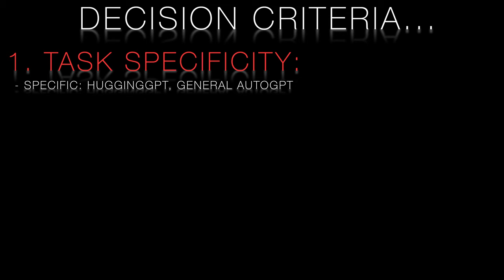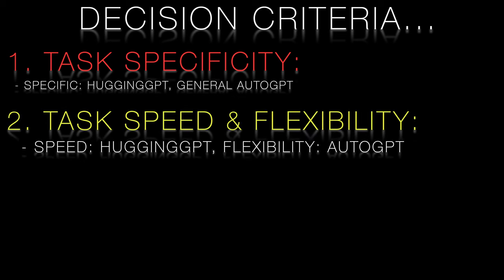When choosing between Auto-GPT and Hugging-GPT, you should consider the following points. Task Specificity: is your task specialised or more general? Hugging-GPT may perform better for specialised tasks, while Auto-GPT is more adaptable for general issues. Speed and Flexibility: Auto-GPT can be slower due to its reliance on internet searches for few-shot learning, while Hugging-GPT offers faster performance with its expert models.